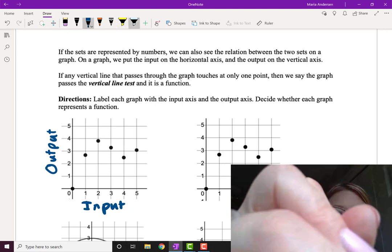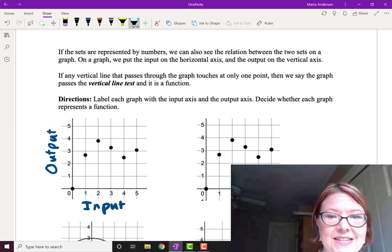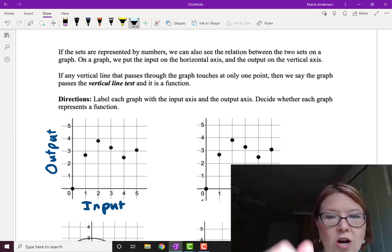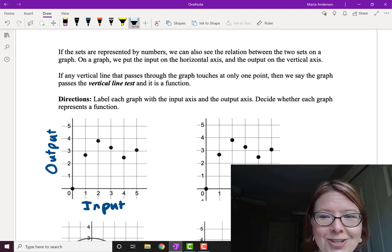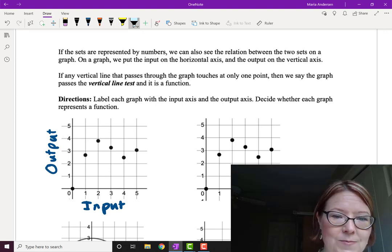Another way we can test this is using something called the vertical line test. That is, we can draw a vertical line through the graph and if we can do that anywhere on the graph and it only touches at one point, so let me draw some example lines.